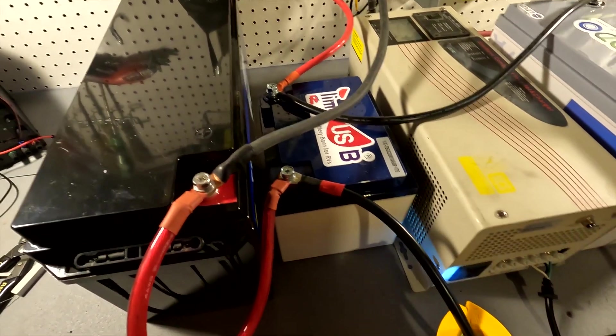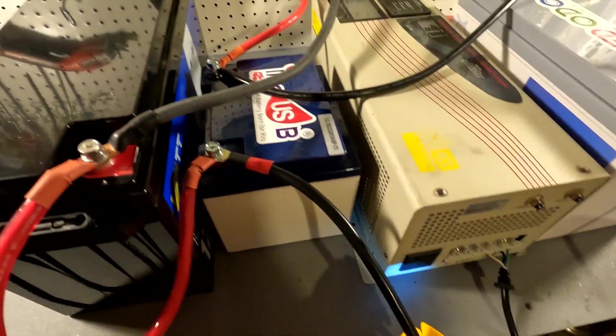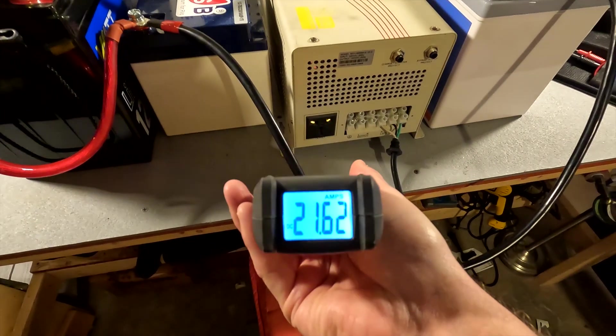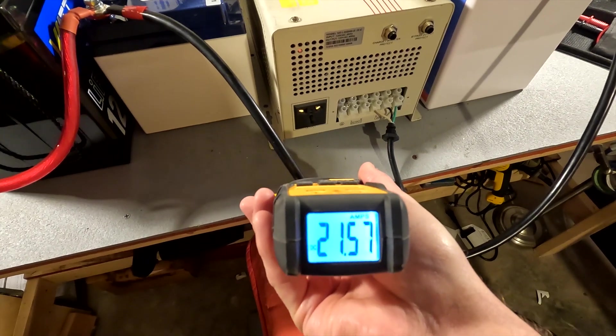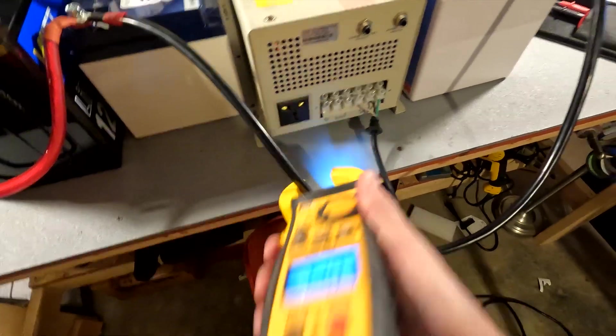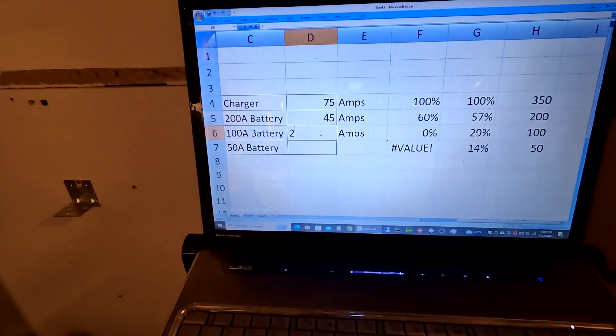And now in this cable, which is what is left after the battery has gone through this battery and the 50 amp battery, what's left is 21.6. So let's go ahead and say, let's just say 22. So we're going to say the 100 amp battery is getting 22 amps.